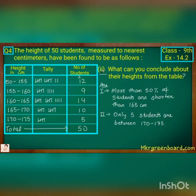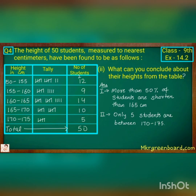Now let us move on to the next question: what can you conclude about their heights from the table? First, more than 50 percent of the students are shorter than 165 centimetres. Second, only 5 students are in the 170 to 175 range, that is in the taller category. This was our required solution.